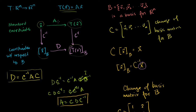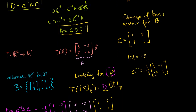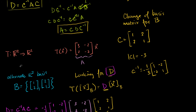In the last video, we said you can do the same mapping but just in an alternate coordinate system — with respect to some basis B. That should be the same thing; it should just be a different transformation matrix. And in the last video, we actually figured out what that different transformation matrix is — we had a change of basis. So let's copy everything from that example so we understand what we did.